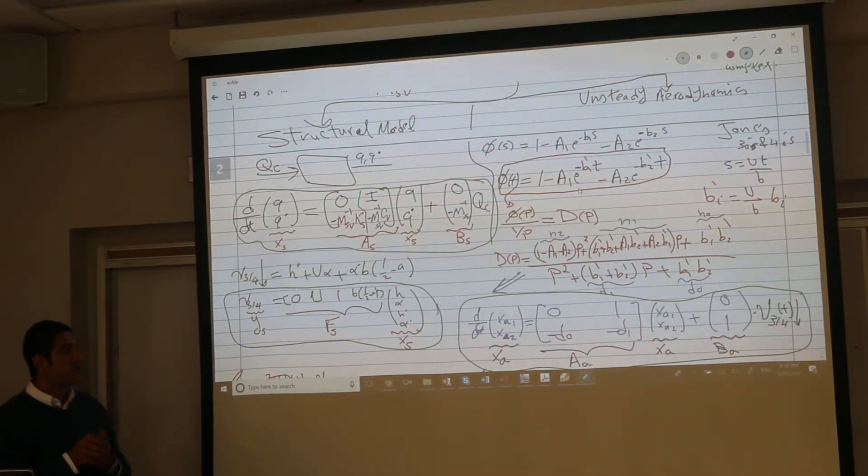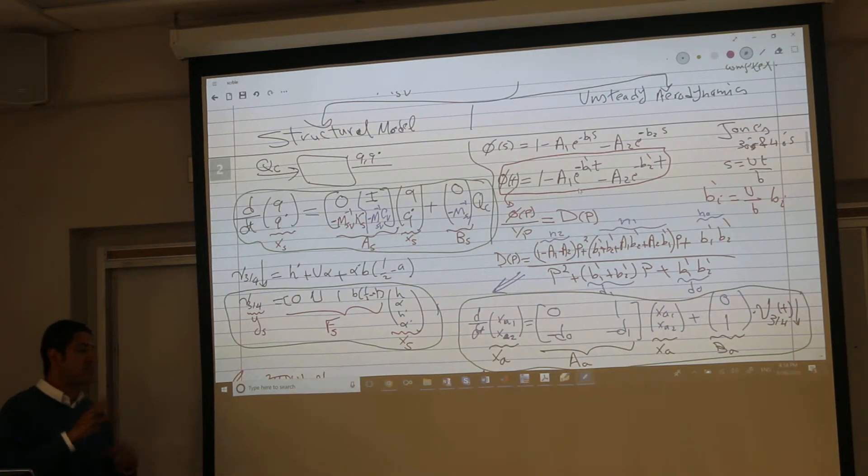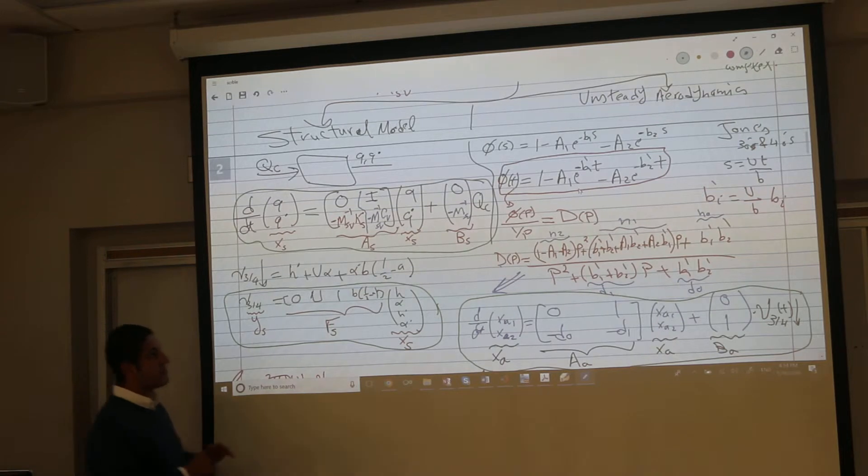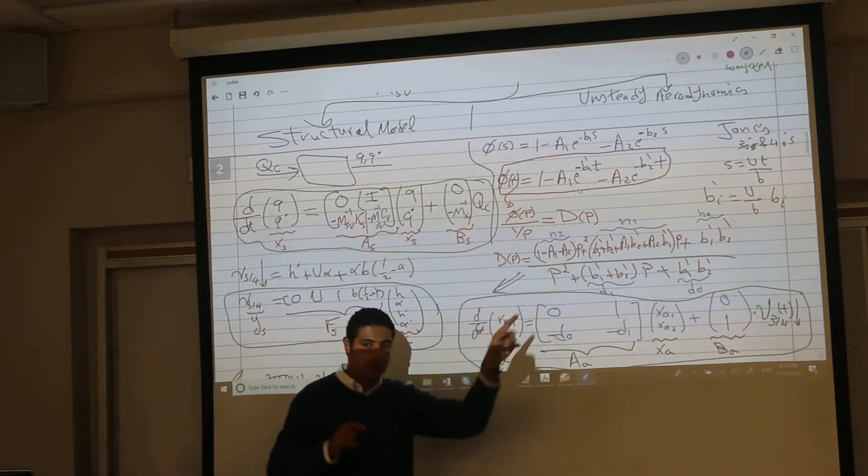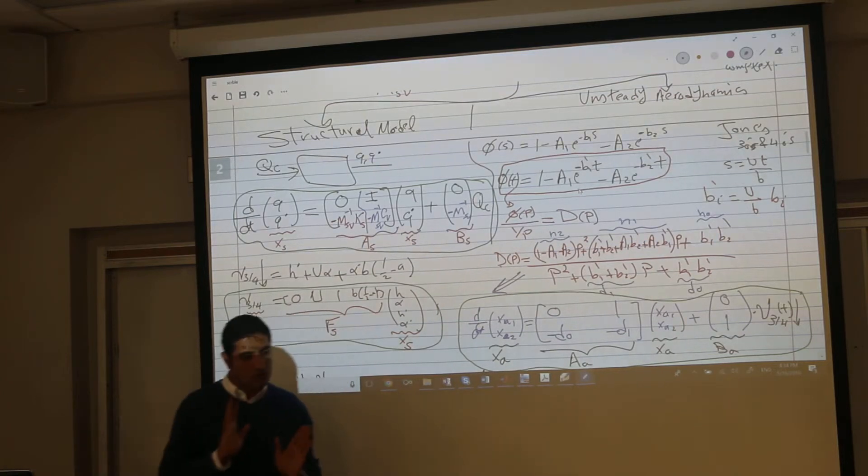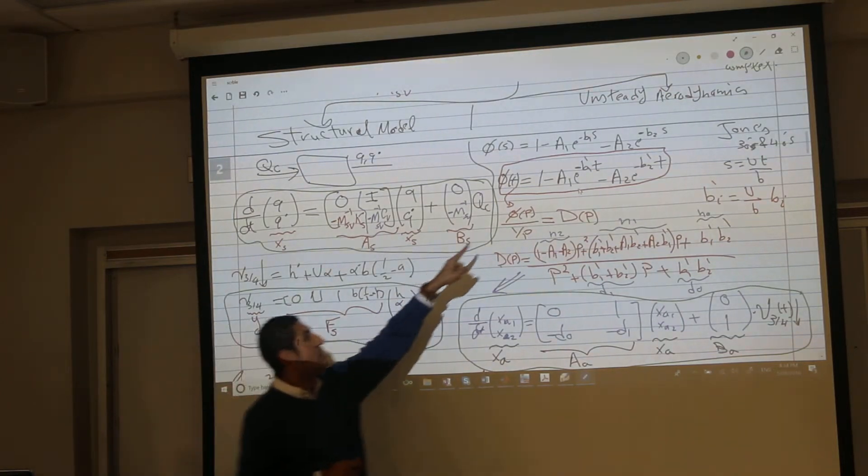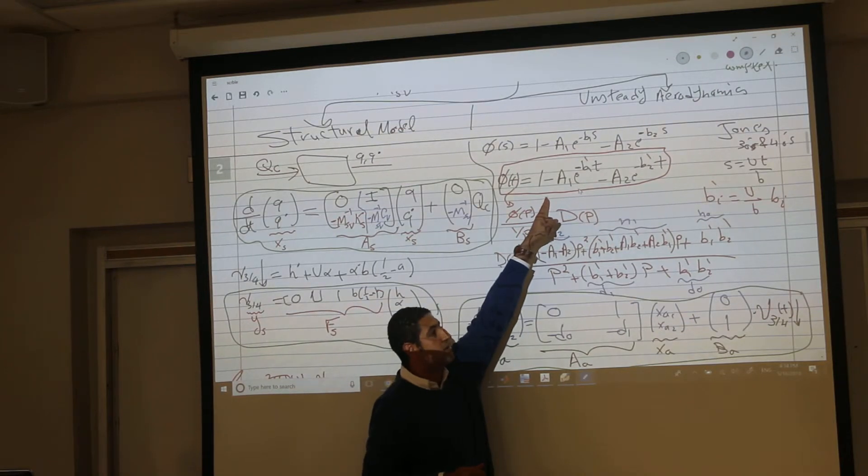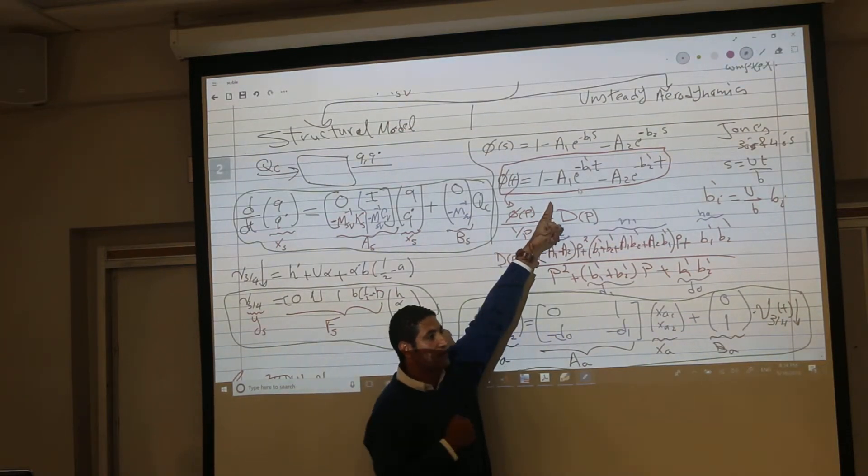We did not assume that the flutter is fast enough or slow enough. If this confusion comes from the fact that we use the step response and everything has to happen within the transient, no. Why? Because we are not using this guy directly. It's the same thing for the frequency response.